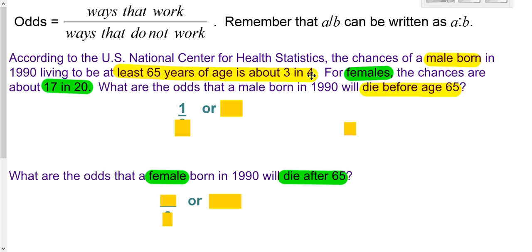Once out of four ways. Well, that means there's three ways that don't work for us, and that's those that live to at least 65. So that's one out of three, one third, or you can go one to three as a sideways ratio.